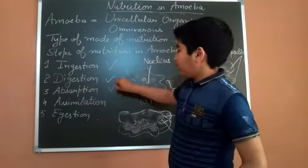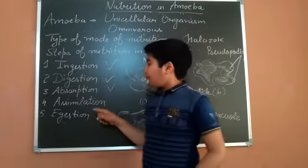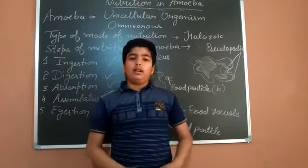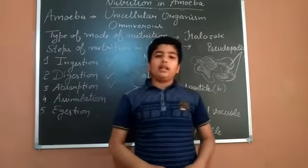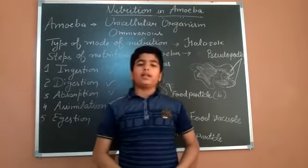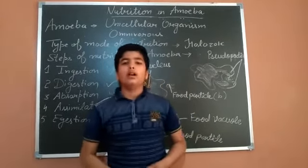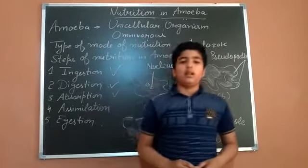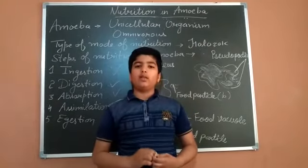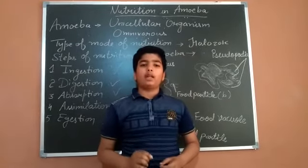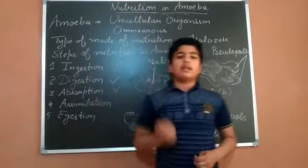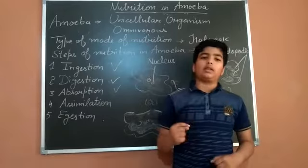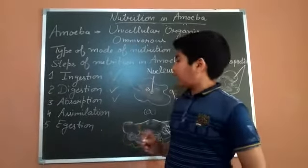The absorbed food then goes to the fourth step, called assimilation. In this step, the cell uses the absorbed food for various metabolic activities. The absorbed food is used by the cell for metabolic activities — processes like movement and digestion of all the food.